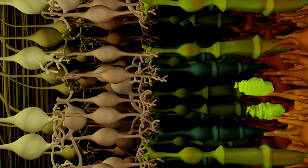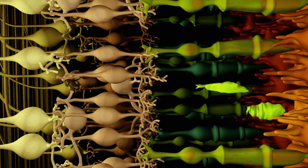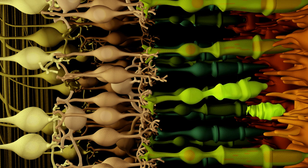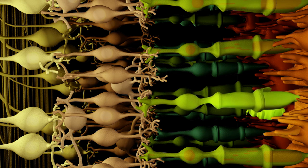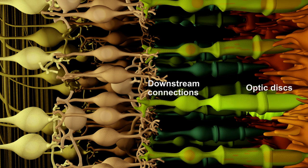To restore damaged vision, the cells have to complete the transformation into mature photoreceptors by producing optic discs to receive light, establish connections with existing downstream retinal cells, and transmit signal information.